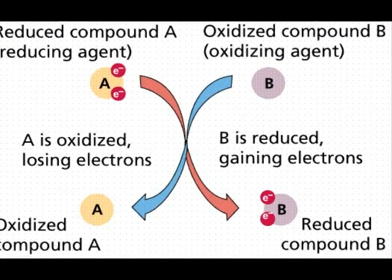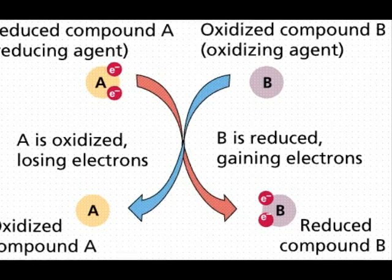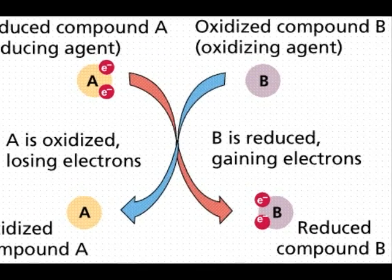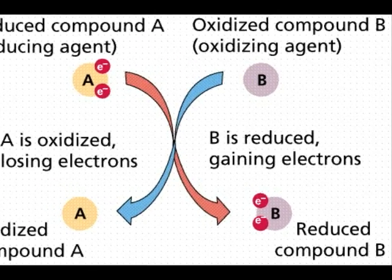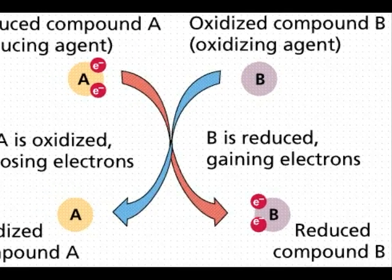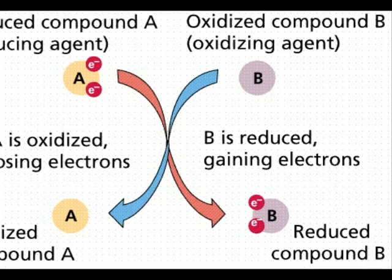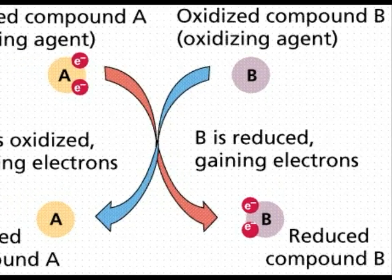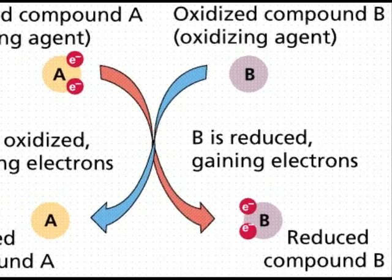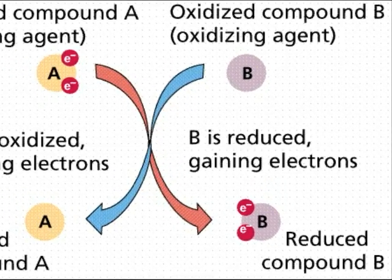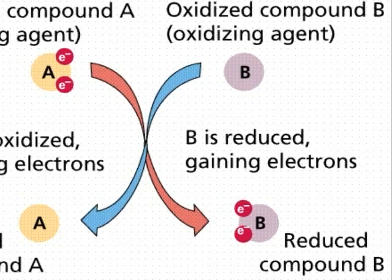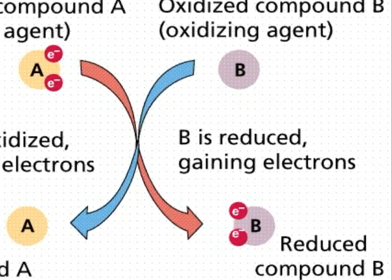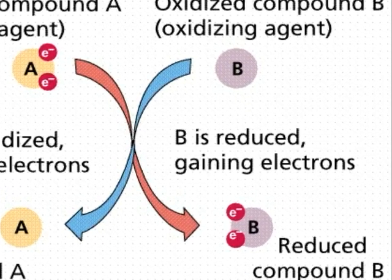All right, let's review what has occurred so far. Copper wire was placed in the hydrochloric solution. Copper acted as the reducing agent and oxidized, losing electrons. The hydrochloric acid, which was the oxidizing agent, got reduced and gained electrons.